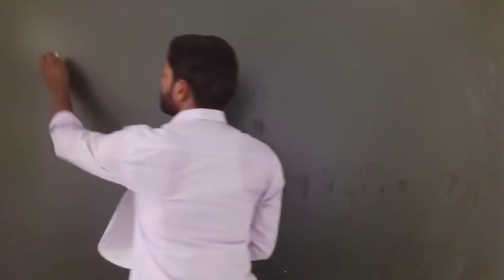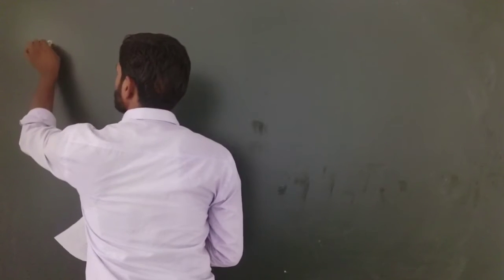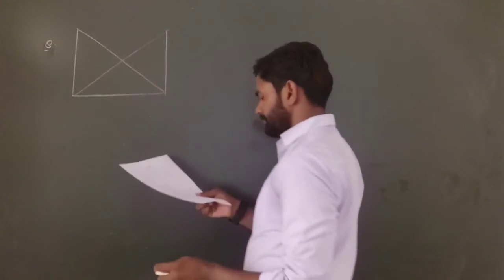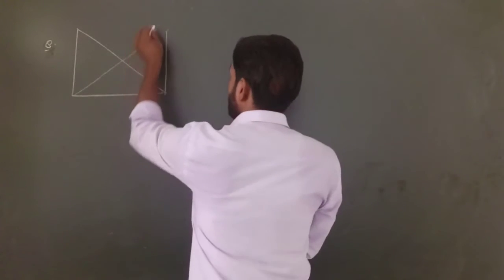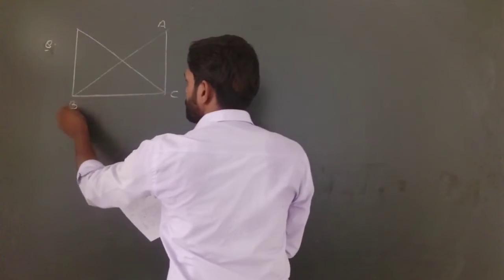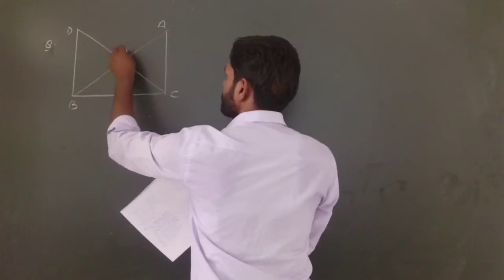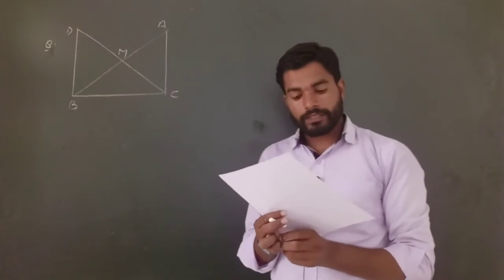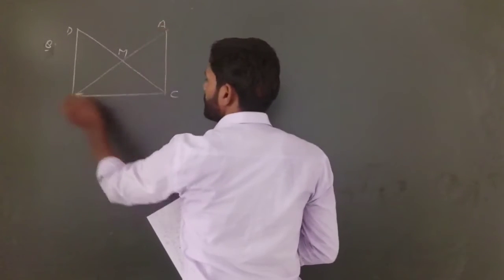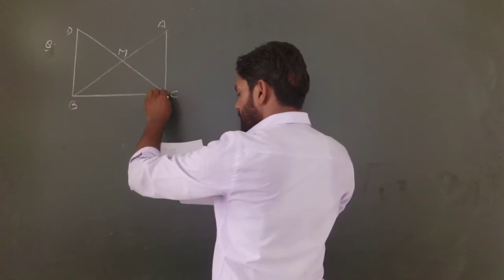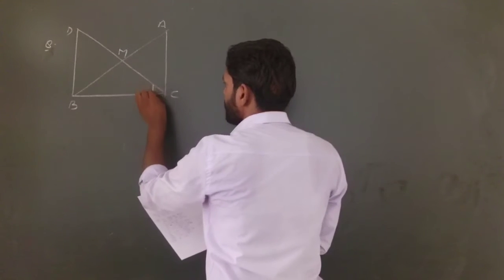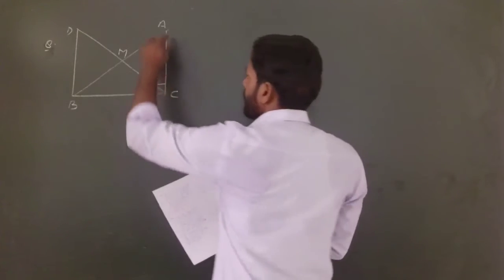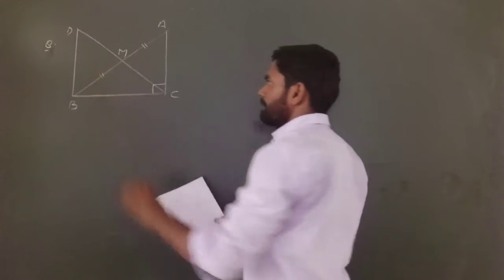A structure is given. The labeling is A, C, B, D and the point M. The given question: in a right angle triangle ABC, right angle is at C. M is the midpoint of hypotenuse AB, which means AM is equal to BM.